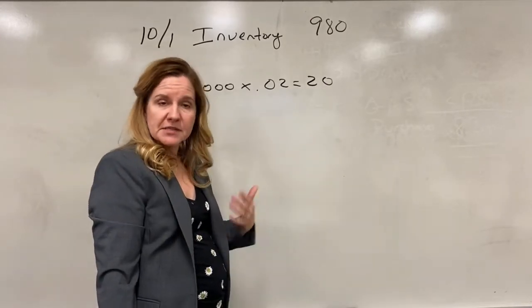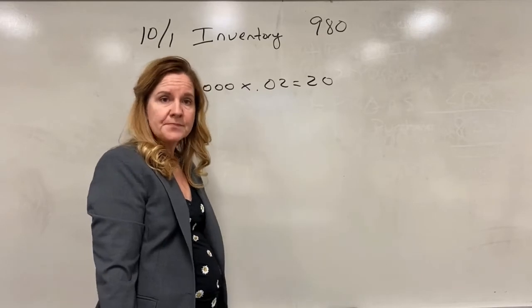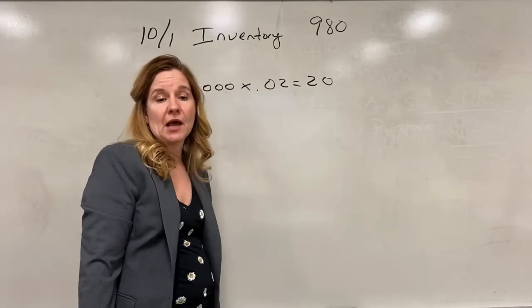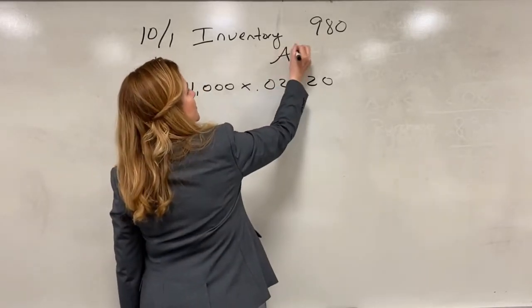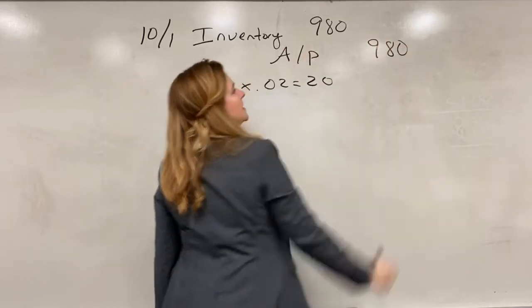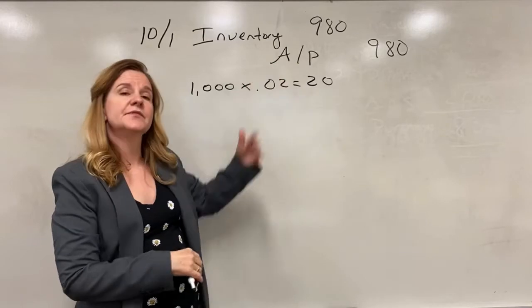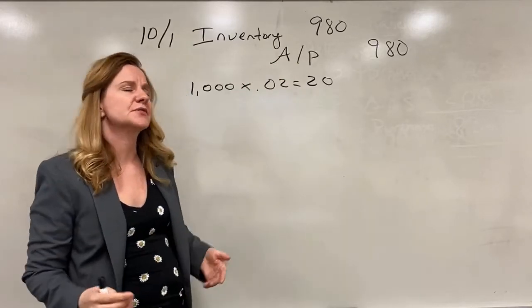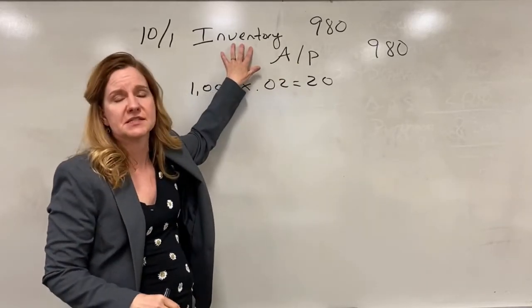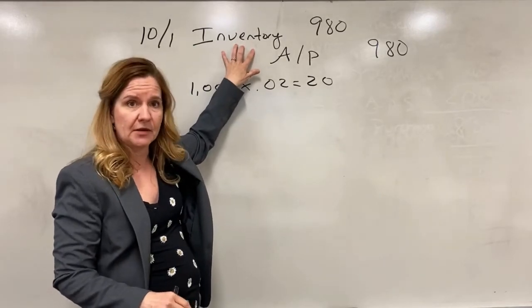I'm going to do this on credit because I got terms 2/10 net 30. So I'm going to credit accounts payable for the 980. Now if this was the periodic method, this would be the perpetual method. If this was the periodic method the only difference would be this would be purchases instead of inventory. We would debit the purchases account.